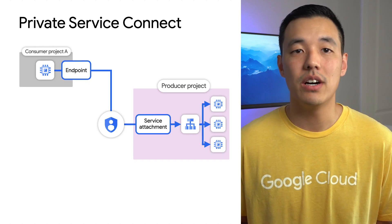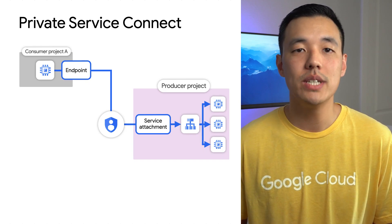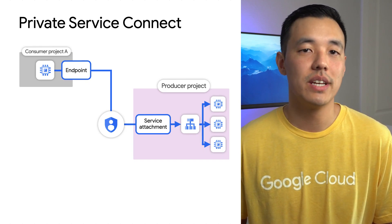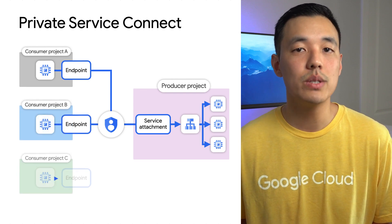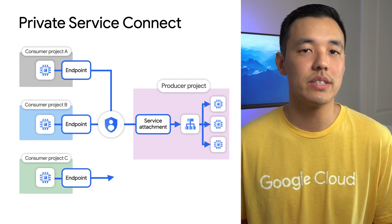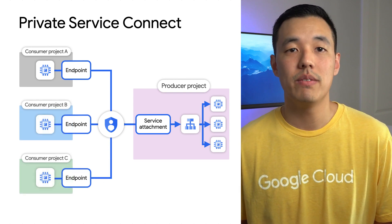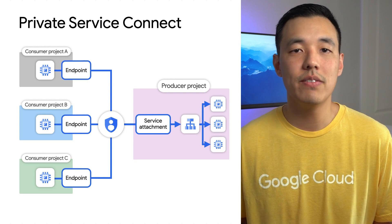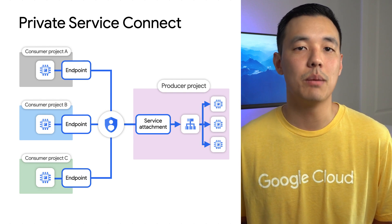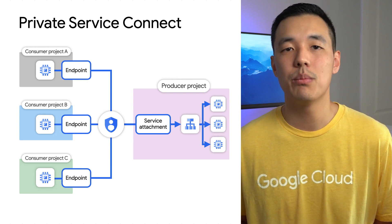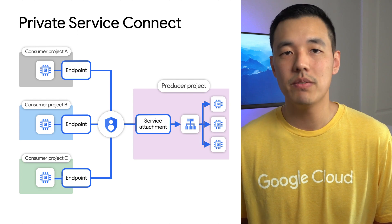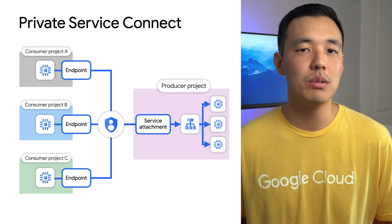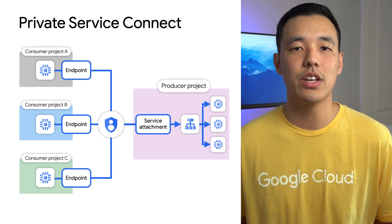Private Service Connect also allows for multi-tenant services, meaning different consumers can connect to a multi-tenant service. With Private Service Connect, producers can significantly scale in a private and secure manner. This gives flexibility to a SaaS provider as it enables easy and secure private connectivity.